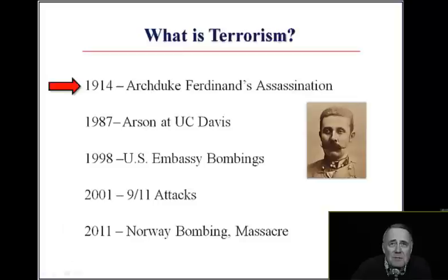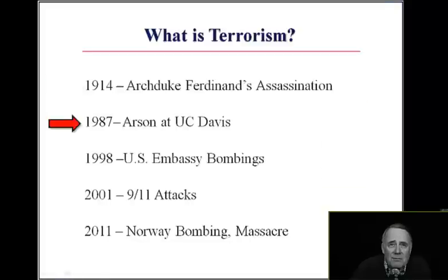The first example is Archduke Ferdinand's assassination on 28 June 1914. Archduke Franz Ferdinand of Austria and his wife were shot dead in Sarajevo by a terrorist belonging to a group of six Bosnian Serb assassins. The political objective was to break off Austria-Hungary's South Slav provinces so they could be combined into a greater Serbia or Yugoslavia.